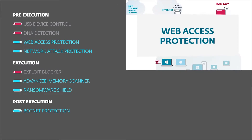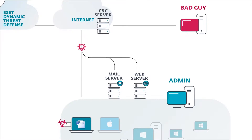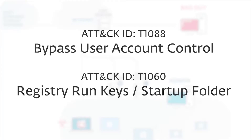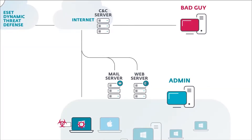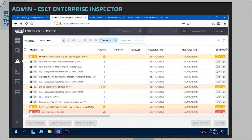If it weren't for Web Access Protection, the malware would continue to run, and the first thing it would try to do is elevate its privileges and then establish persistence. This is a typical step for malware — once they get in, they want to make sure they stay on the system. We can also see the malware behavior in our EDR solution, ESET Enterprise Inspector.